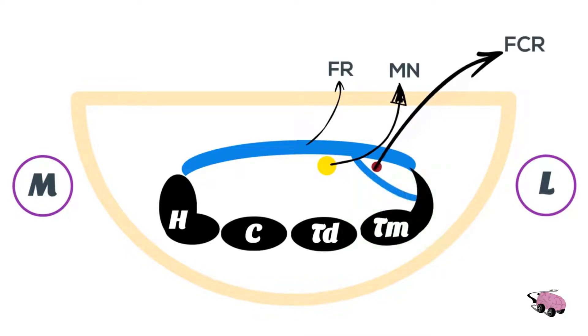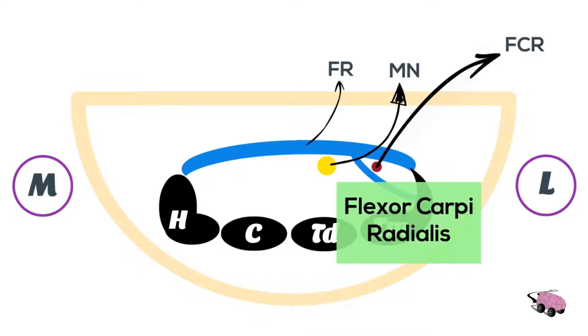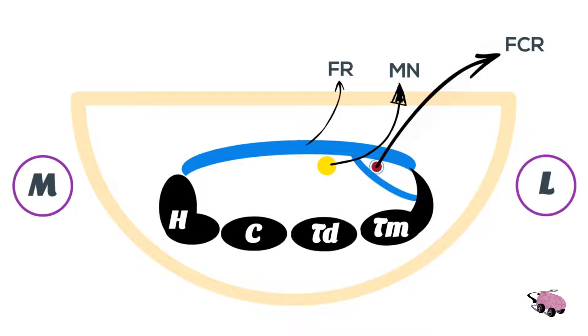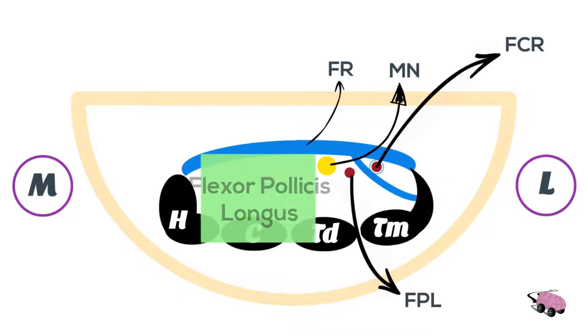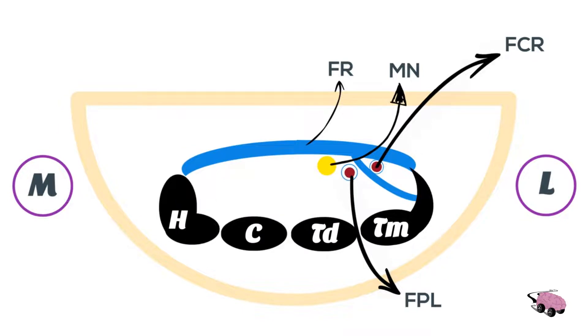The next one is a muscle, flexor carpi radialis, along with the synovial sheath. Next one is flexor pollicis longus, again with the synovial sheath.